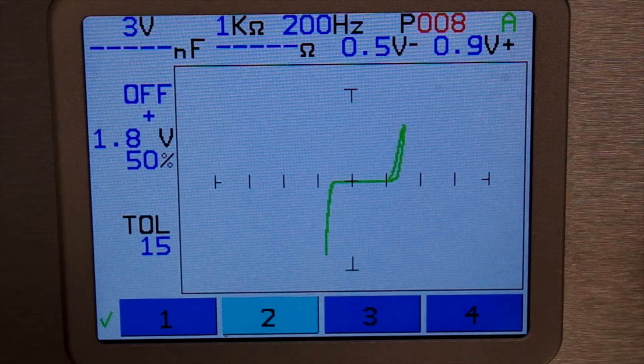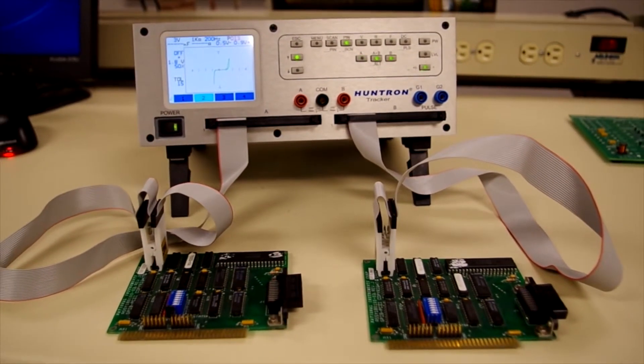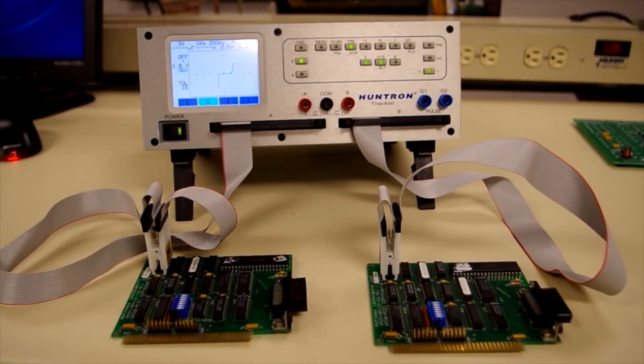Incrementing the pin is accomplished using the up and down arrow buttons. For a more automated approach, the tracker can scan and display signatures of multi-pin components of side-by-side circuit boards.